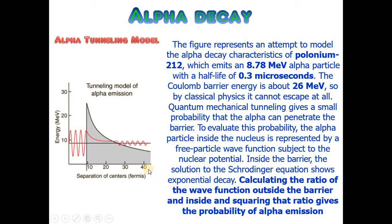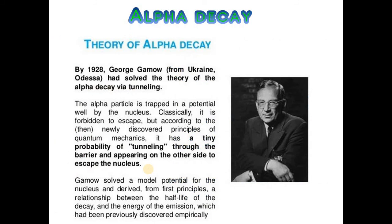Theory of alpha decay was first theorized in 1928. George Gamow was a scientist who solved the theory of alpha decay via tunneling. The alpha particle is trapped in a potential well by the nucleus. Classically, it is forbidden to escape, but according to newly discovered principles of quantum mechanics, it has a tiny probability of tunneling through the barrier and appearing on the other side to escape the nucleus.